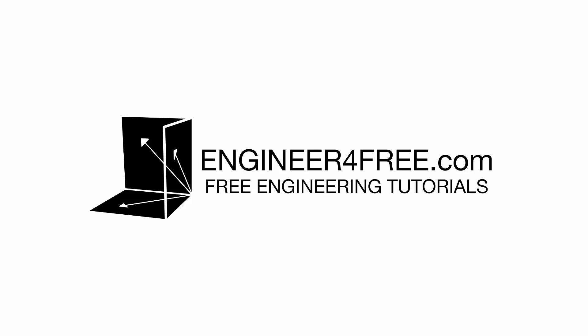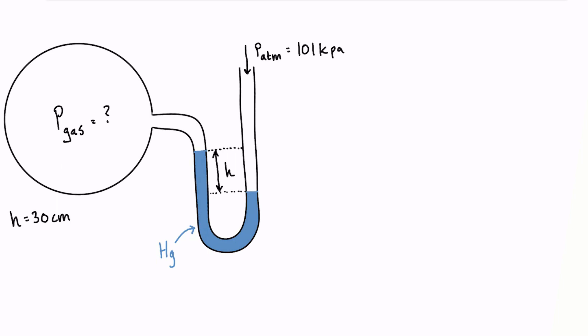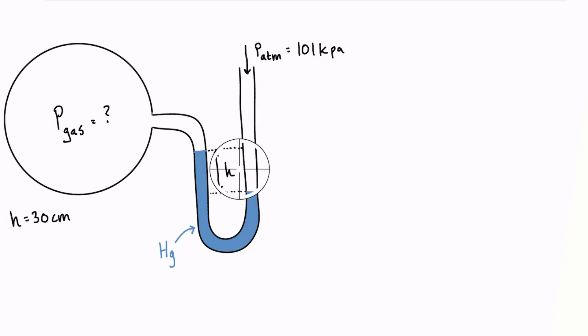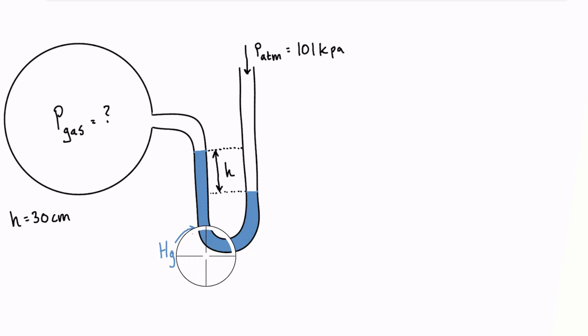What's up guys? Welcome back. We're going to do another simple manometer example problem here, just rip through it quickly. In this case, we've been given a problem where we have an unknown pressure of a gas inside the manometer. We have the atmospheric pressure at 101 kPa, a height difference in the column fluids from one side to the other of 30 centimeters, and the fluid we're working with is liquid mercury.